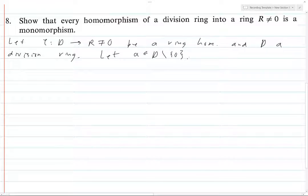D is not 0 because it is a division ring, and division rings cannot be 0.